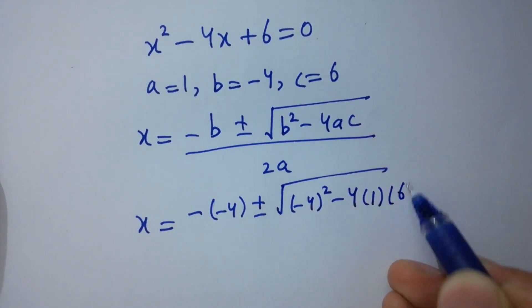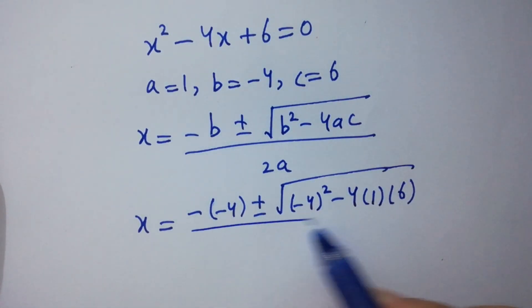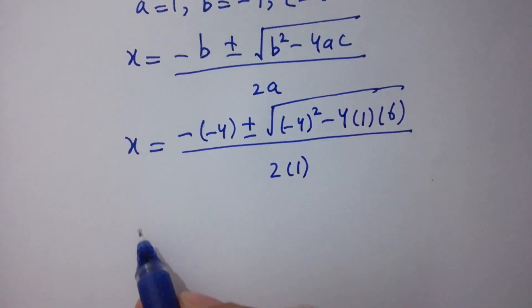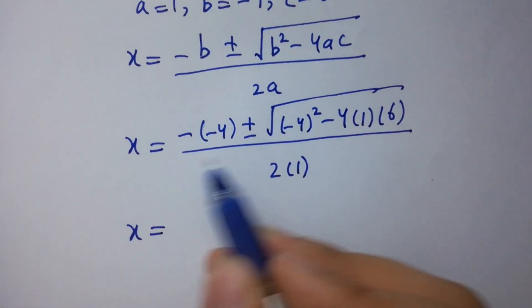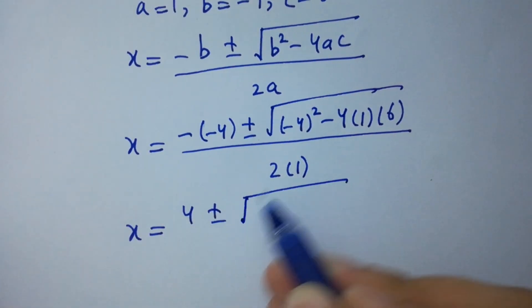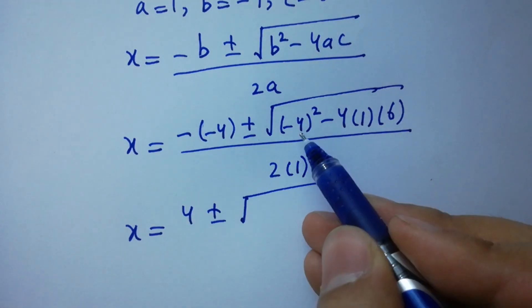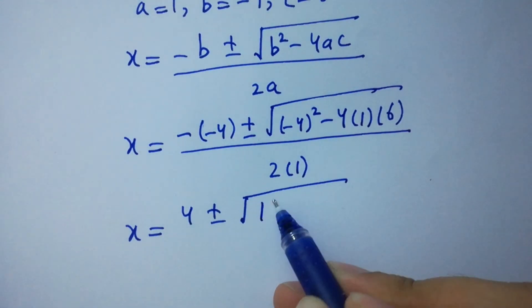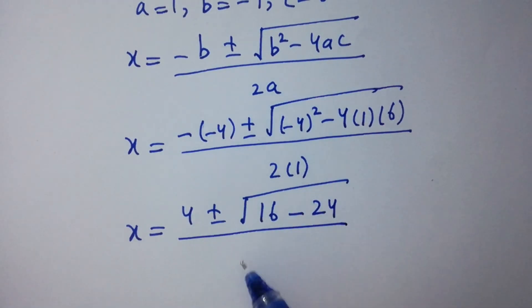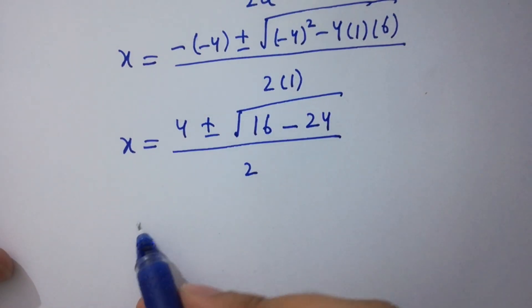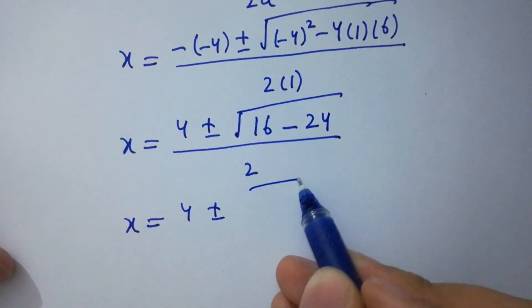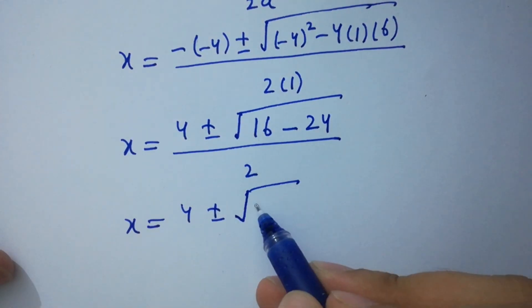Simplifying: x equals 4 plus or minus square root of (16 minus 24) over 2, which gives x equals 4 plus or minus square root of (minus 8) over 2.